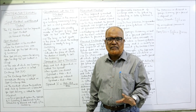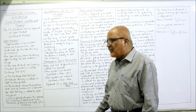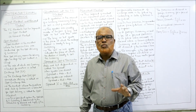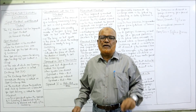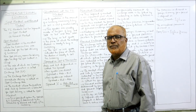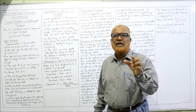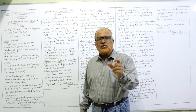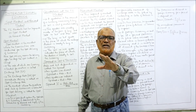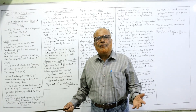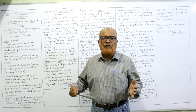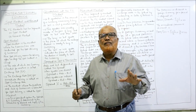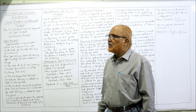In a free float system, the price is not regulated — the rate is fixed by demand and supply. So in a free float system, the spot rate is fixed by the interaction of demand and supply, just as the price of goods is fixed in a competitive market. In the foreign exchange market, the demand and supply of foreign currency will fix the spot exchange rate.